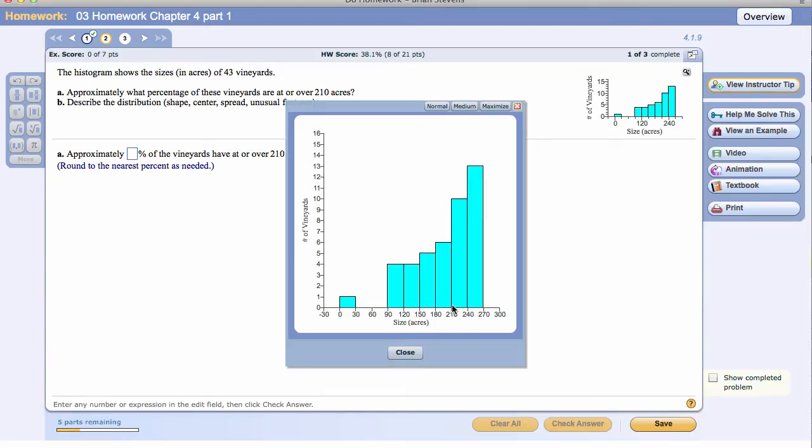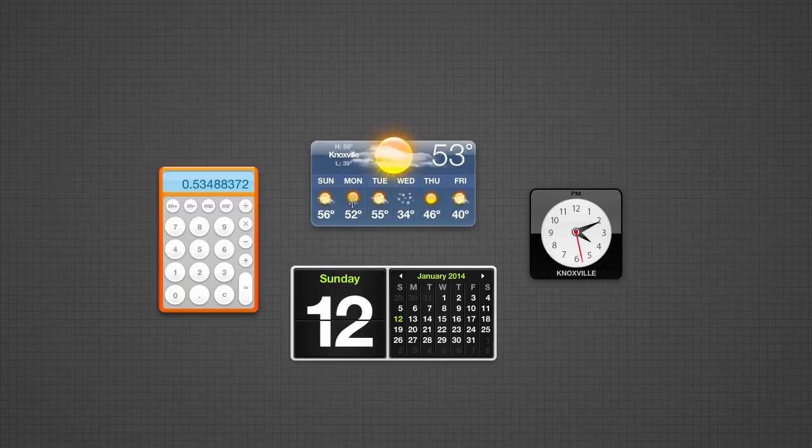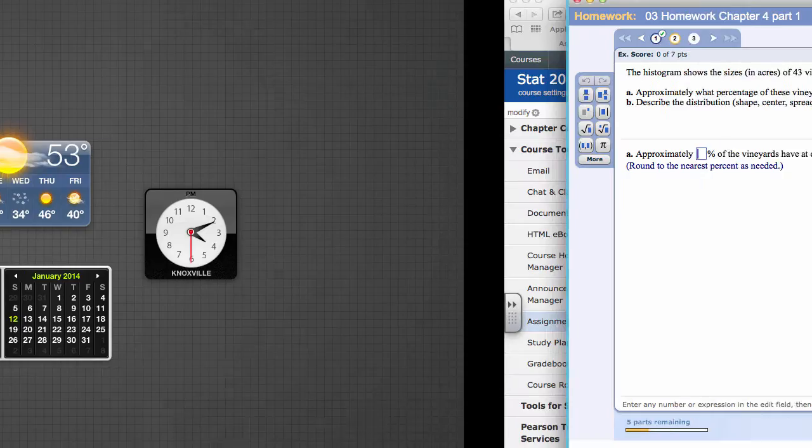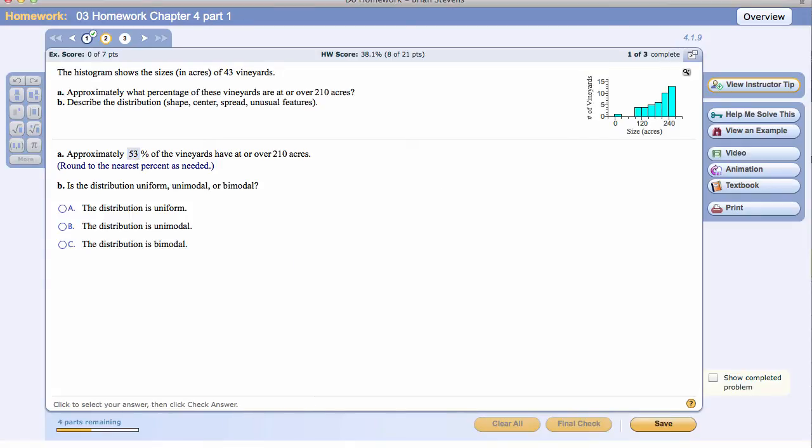There could be one right at 210, but let's say safely that these are all the ones 210 or over. And it does say at or over 210. That is 10 here and 13 here for a total of 23 out of 43. 23 out of 43 is 53.48. So 53.48 rounds to 53. Be very careful on your rounding.